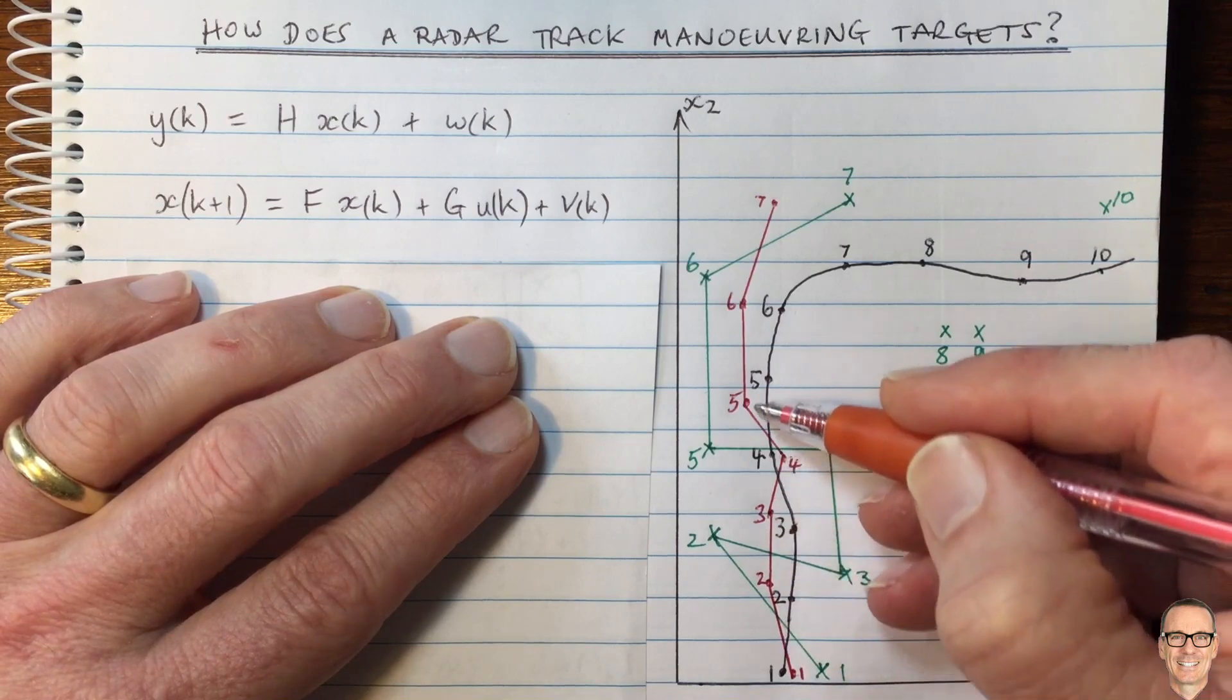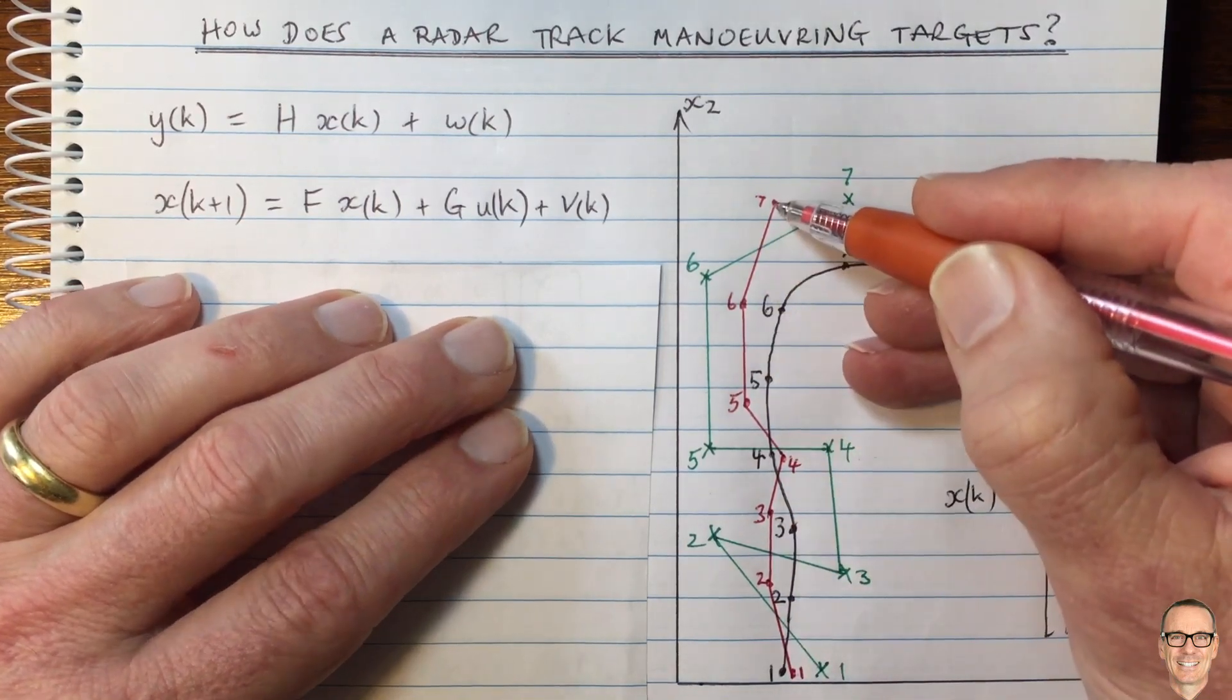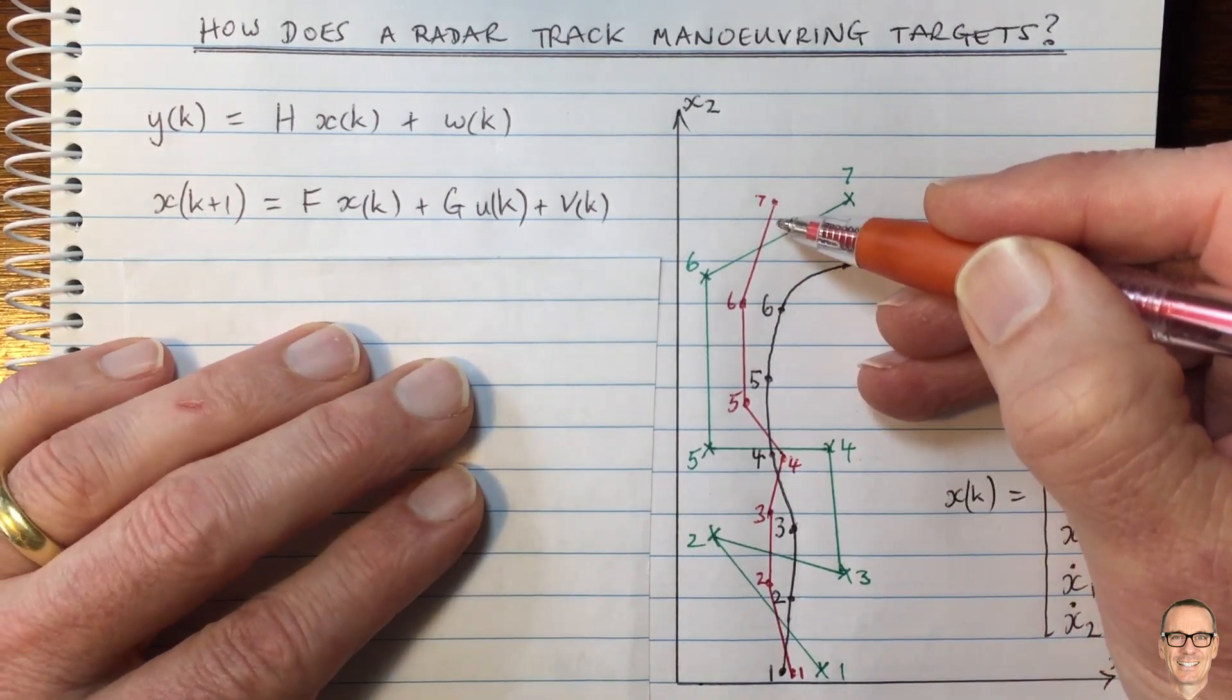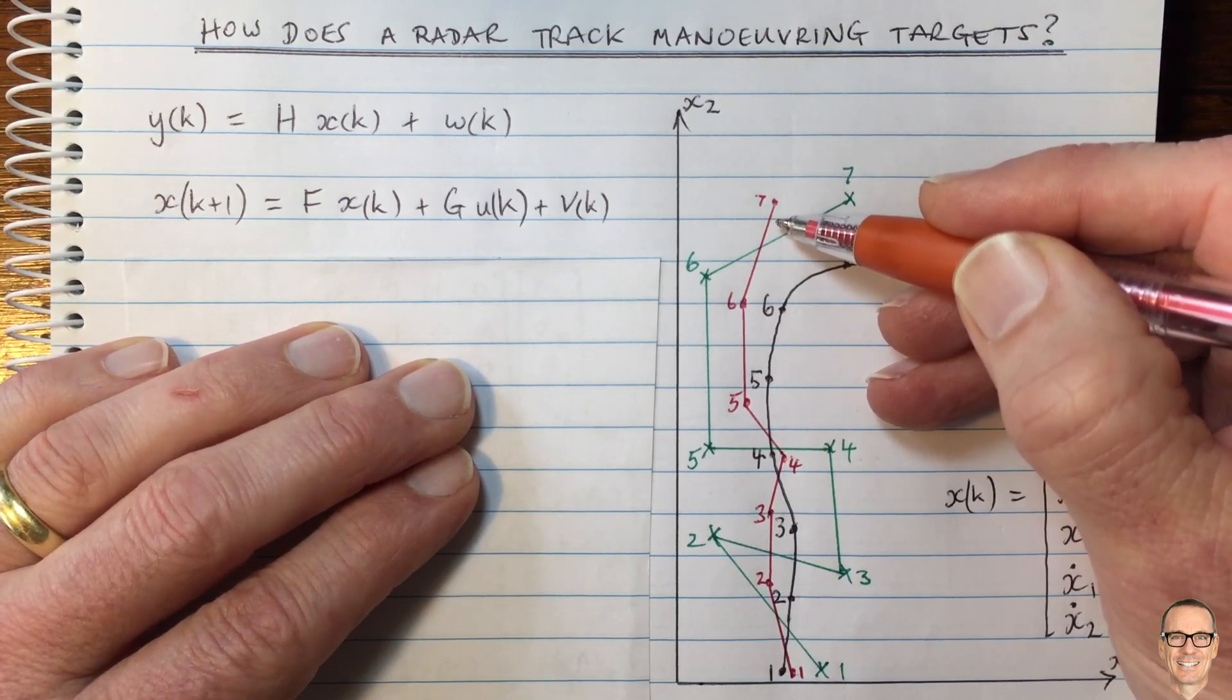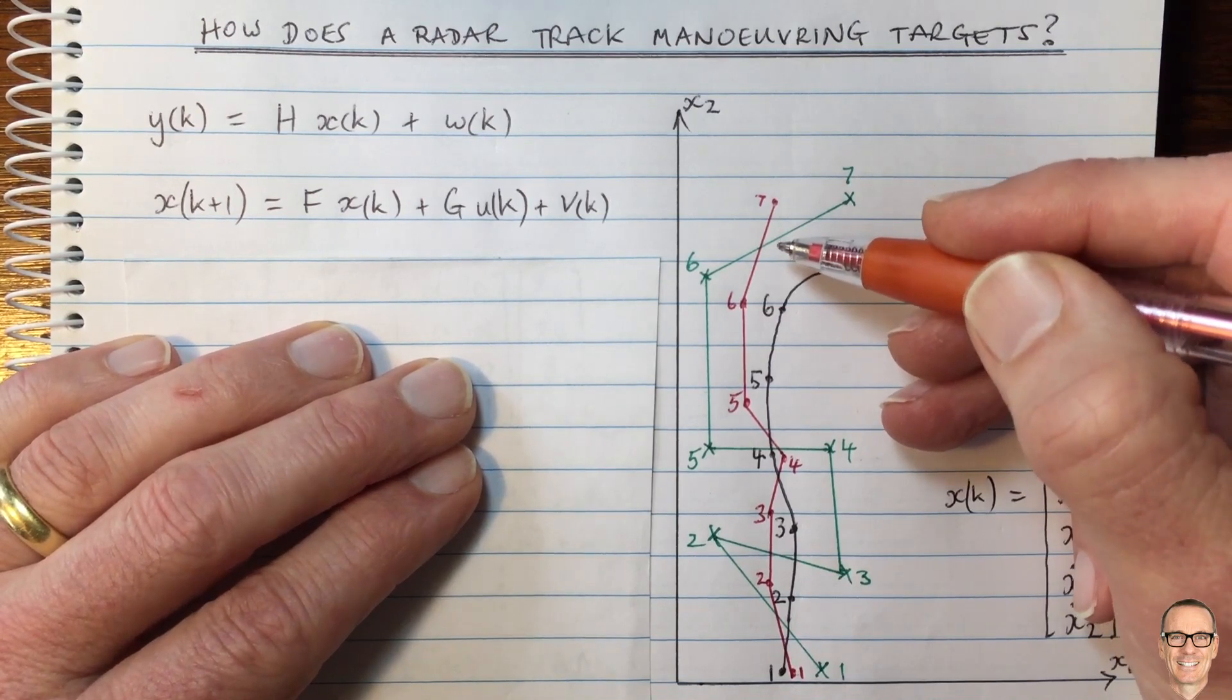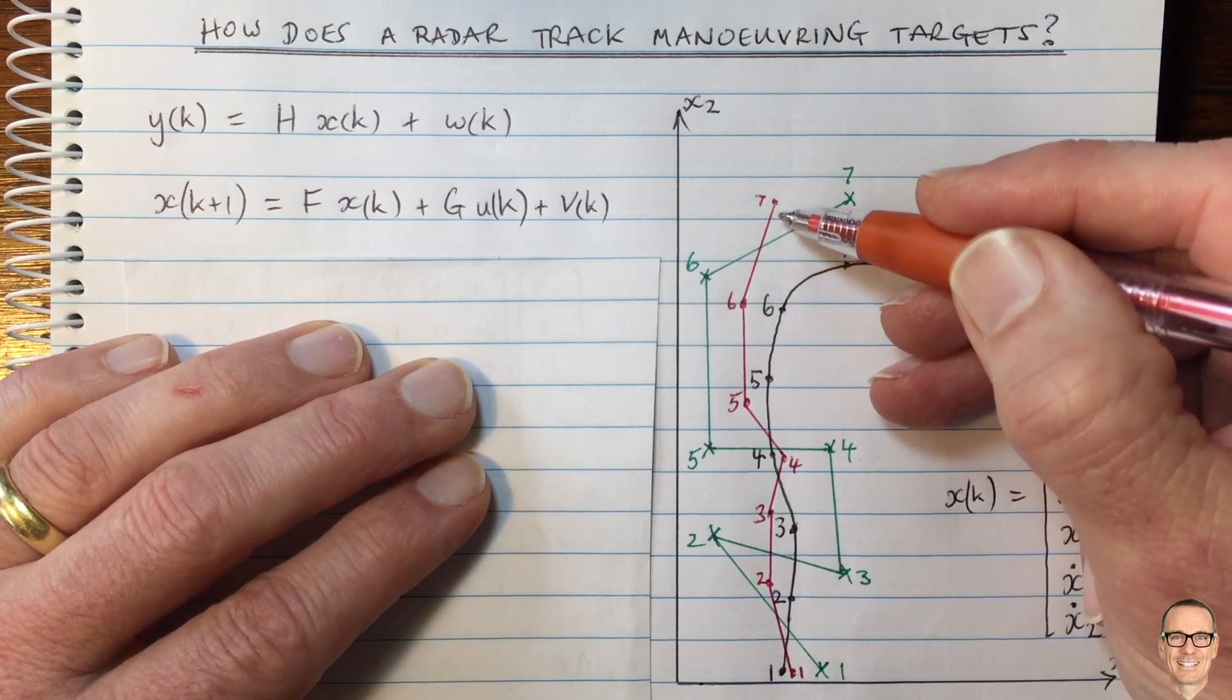And so now I've drawn in, in red, an example of what that smoothed estimate might be. And one way to do this is to use the Kalman filter. And for details about the Kalman filter, check out the description below this video where you'll find a link to a video about the Kalman filter. You'll also find a web page which has a full categorized listing of all the videos on the channel.